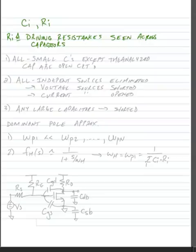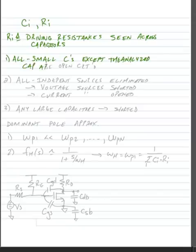To begin the analysis, we're going to assume that all small capacitors except the one we're interested in analyzing are going to be open-circuited. We're actually going to open-circuit the one we're analyzing as well, but we need to be aware that we're going to treat it slightly differently — we're going to figure out how much resistance is across the one we're analyzing.